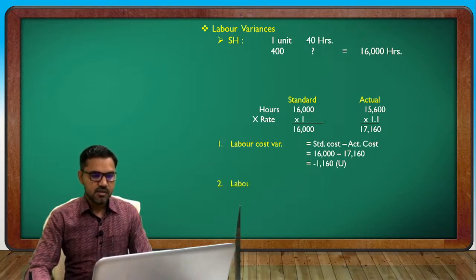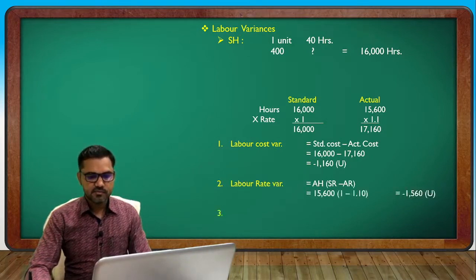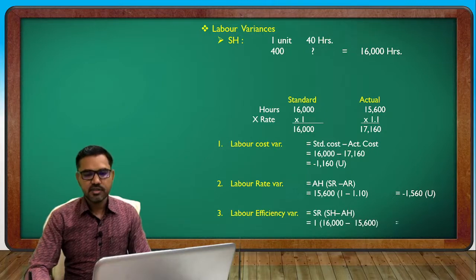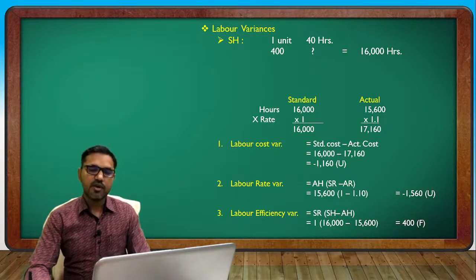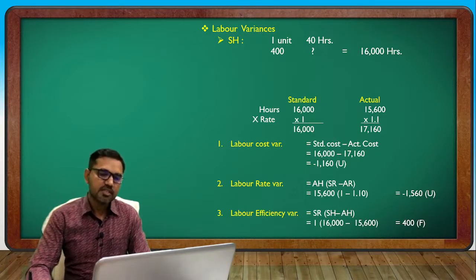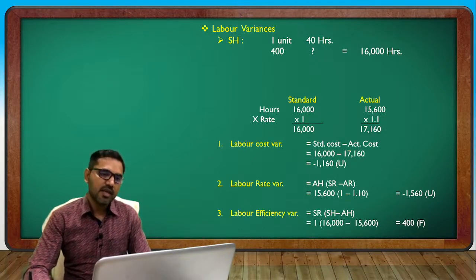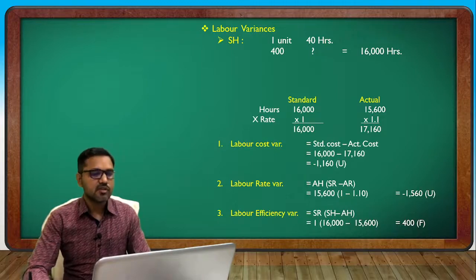Labor rate variance: 15,600 hours at (1.10 minus 1.00) = minus 1,560 (unfavorable). Labor efficiency variance: (16,000 minus 15,600) hours at standard rate 1 = plus 400 (favorable). So: minus 1,560 minus 1,160... basic calculation confirmed.